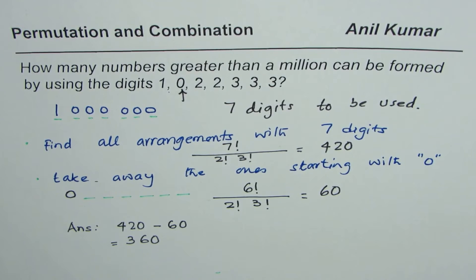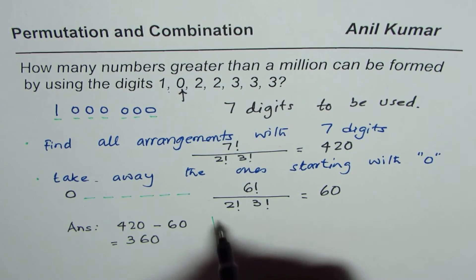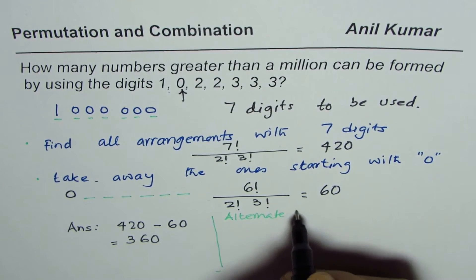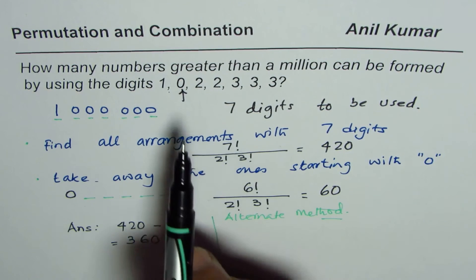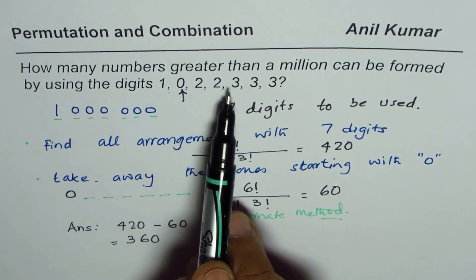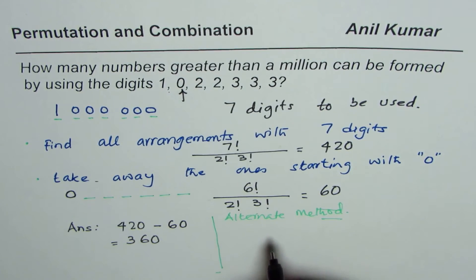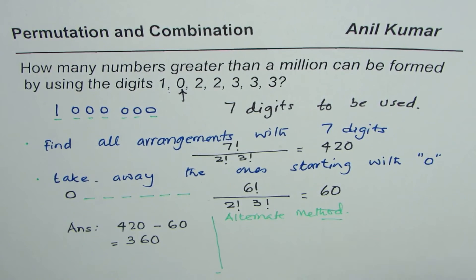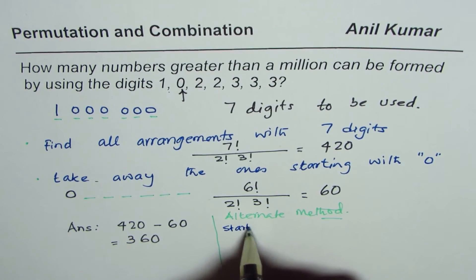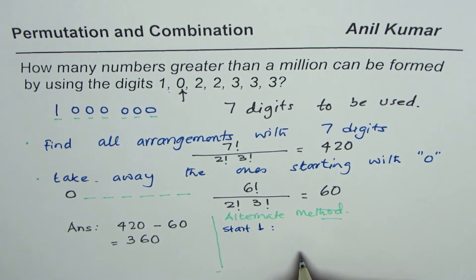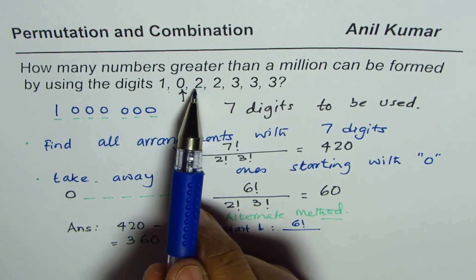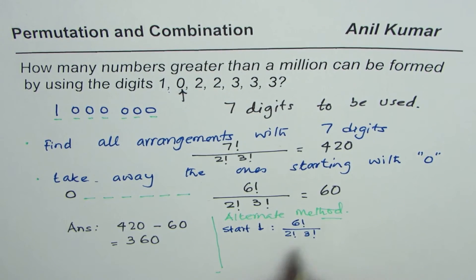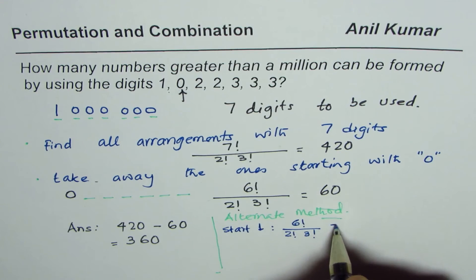Now let me write down an alternate method. Since the number must be greater than one million, the first digit must be 1, 2, or 3. Starting with 1: we fix 1 in the first position, and arrange the remaining six digits — with two 2s and three 3s — giving 6! divided by (2! × 3!), which equals 60.